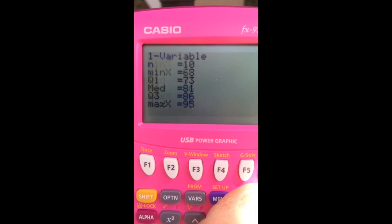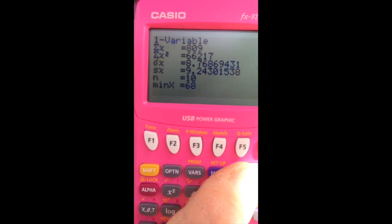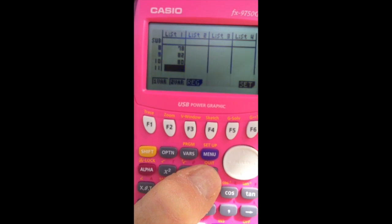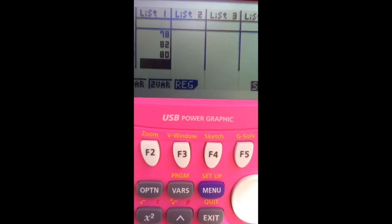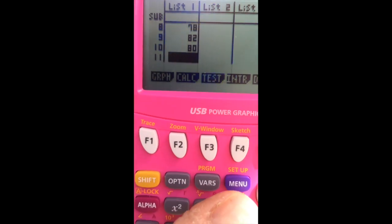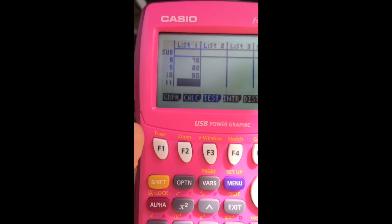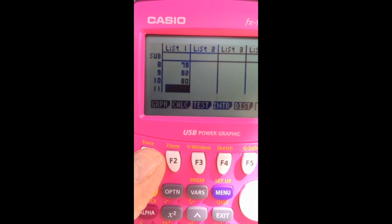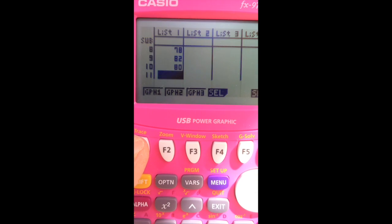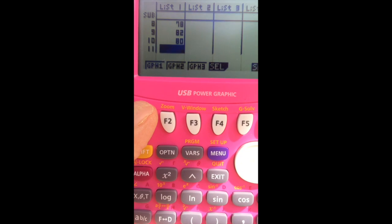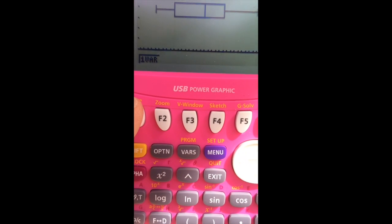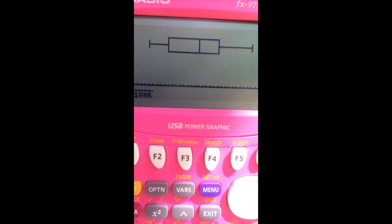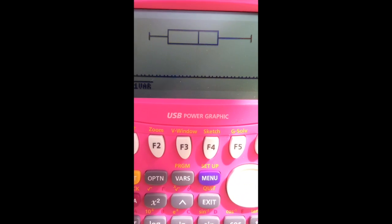Now, this calculator will also graph data. And I can exit. Hit Exit. Brings me back to this menu. I hit Exit a second time. It comes back to this menu. And I can hit my Graph key. And if I hit Graph 1, it shows me a box plot for my data, which is really nice.